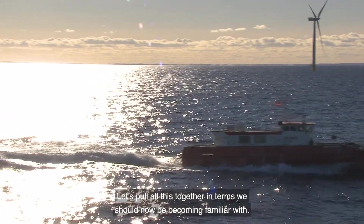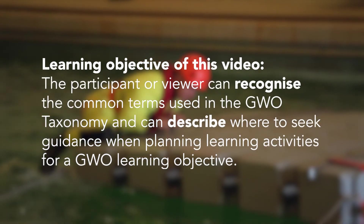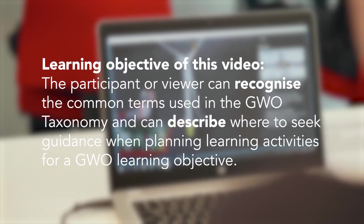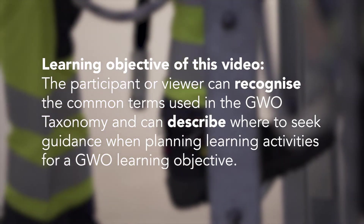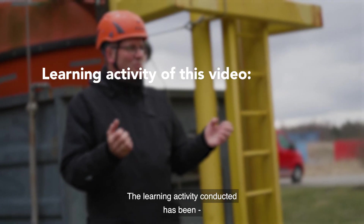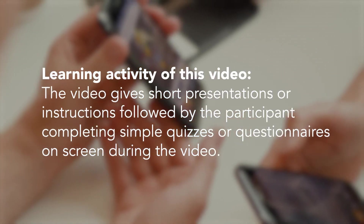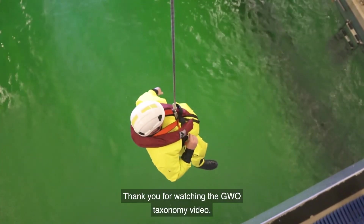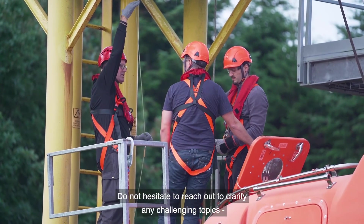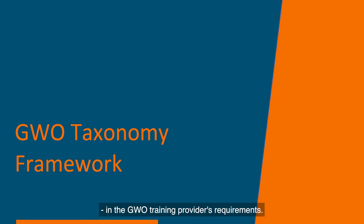Let's pull all this together in terms we should now be becoming familiar with. The learning objective of this video is that the participant or viewer afterwards can recognise the common terms used in the GWO taxonomy and can describe where to seek guidance when planning learning activities for a GWO learning objective. The learning activity conducted has been the video giving short presentations or instructions followed by the participant completing simple quizzes or questionnaires on screen. The learning outcome is assessed by yourself by doing the quiz and questions during the video. Thank you for watching the GWO taxonomy video. Do not hesitate to reach out to clarify any challenging topics, or find the GWO taxonomy framework in the GWO training providers requirements on our website: www.globalwindsafety.org.